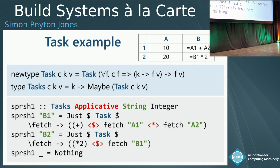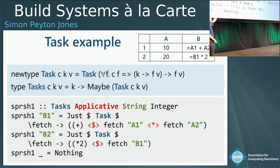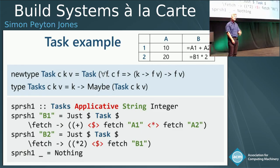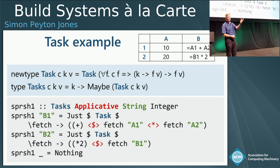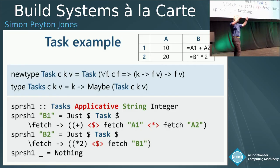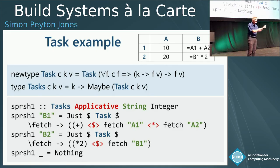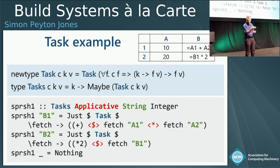Here is a definition of tasks for a spreadsheet in an applicative. The keys are strings, the values are integers. Tasks is just a function from keys to maybes, and it matches on the key string. For cells that have a formula, it returns Just of Task — Task is the data constructor. The lambda fetch is the callback of type key to fv. We fetch the value of A1, fetch the value of A2, and add them together. The intermediate line noise is just the applicative glue.